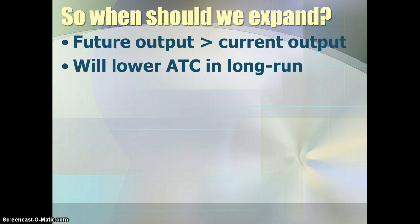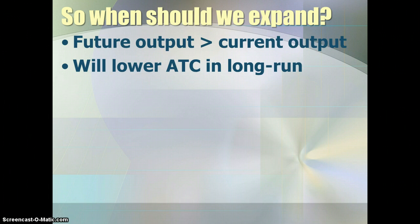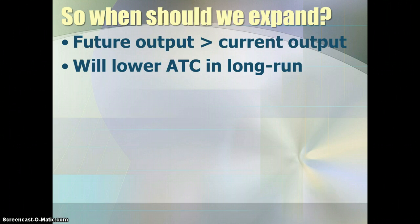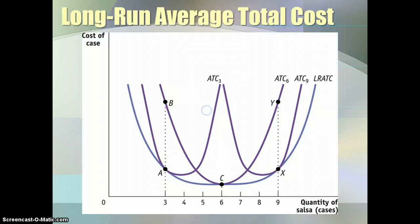The key in the long run is knowing your expected output. If your expected output changes, that will potentially change the input combination you choose, because the goal is to lower the average total cost of production in the long run. To do that, you need a long run average total cost curve — essentially a U-shaped curve made up of the minimum cost point among all the various potential average total cost curves given the different combinations of inputs available.